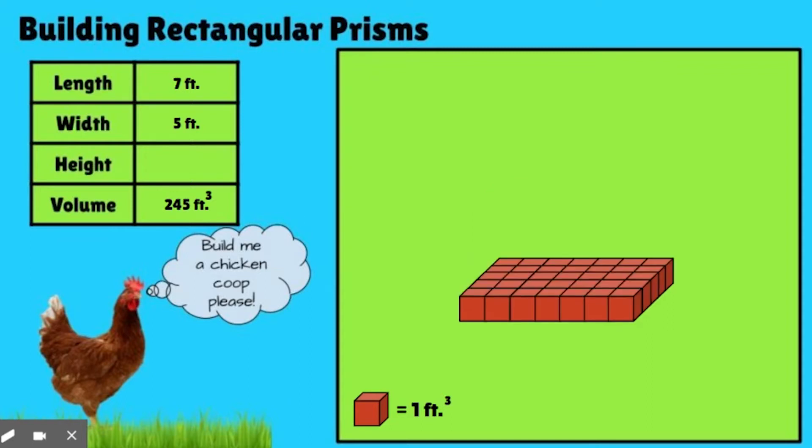But let's say that we know we want the length to be seven feet. We know that we want the width to be five feet. And I know I want the volume of the coop to have 245 cubic feet. So if I want the volume to be 245, what is the height of this figure going to be? Now there's a couple ways to figure this out. I want you to pause and see if you can figure this out. Okay, hopefully you did.